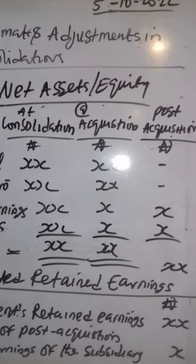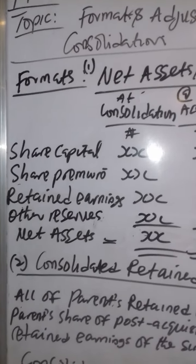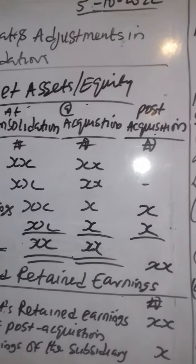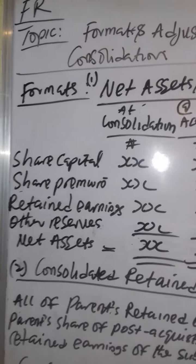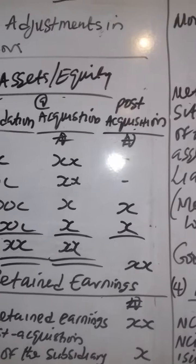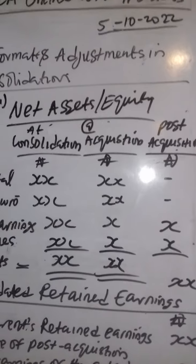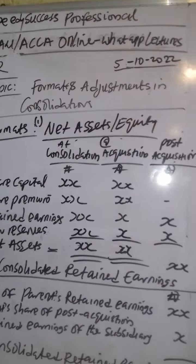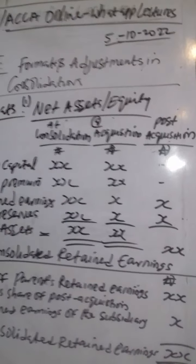Sometimes all the reserves will also remain constant, but where there are revaluations or adjustments they will not remain constant. Retained earnings is not expected to remain constant because the business will have continued after acquisition. The difference between retained earnings at consolidation and retained earnings at acquisition gives us post-acquisition retained earnings. That amount is needed where the acquisition is partly owned, not 100 percent.